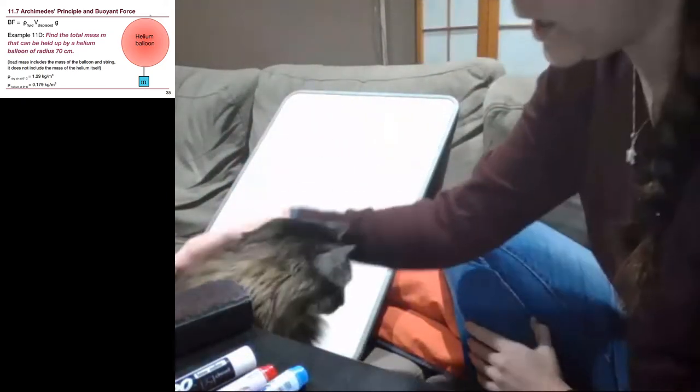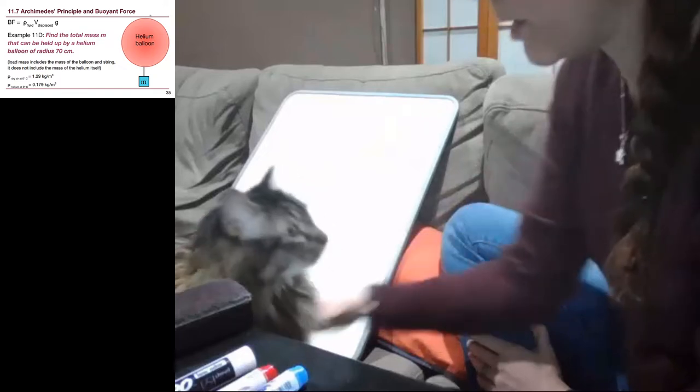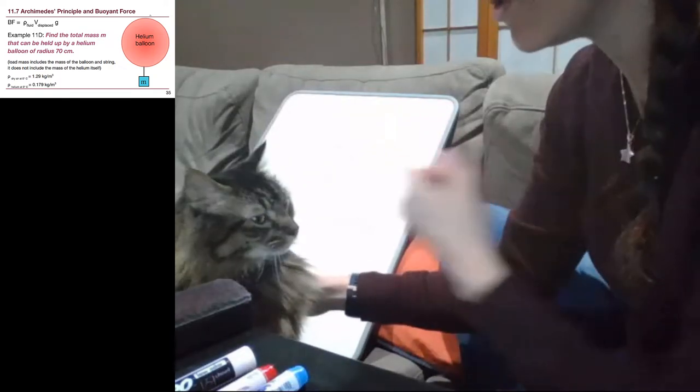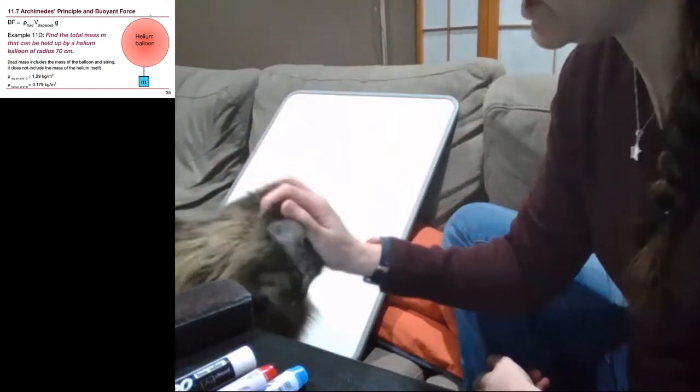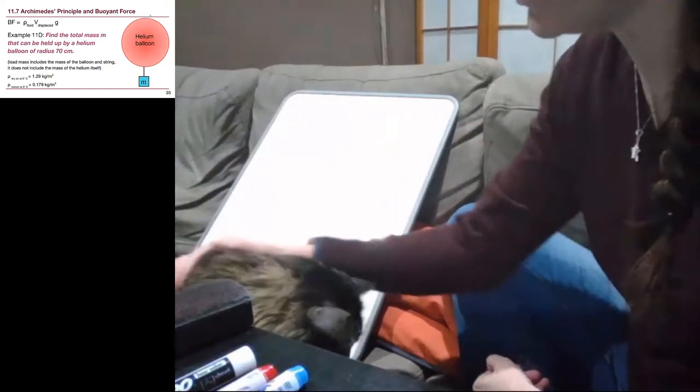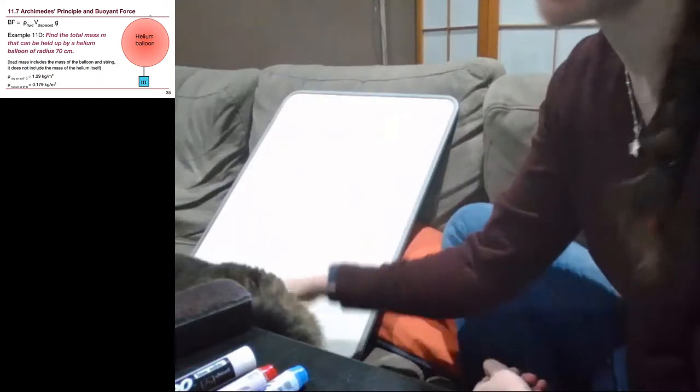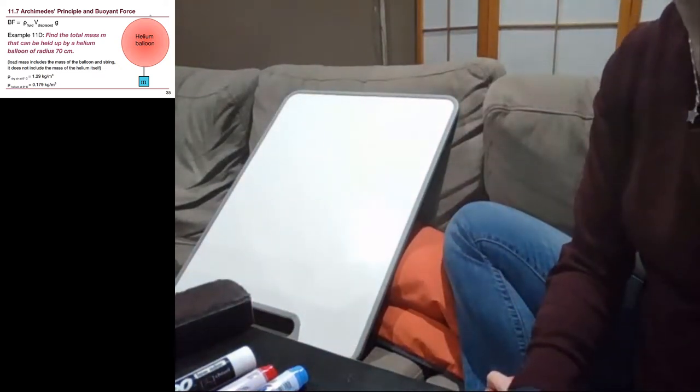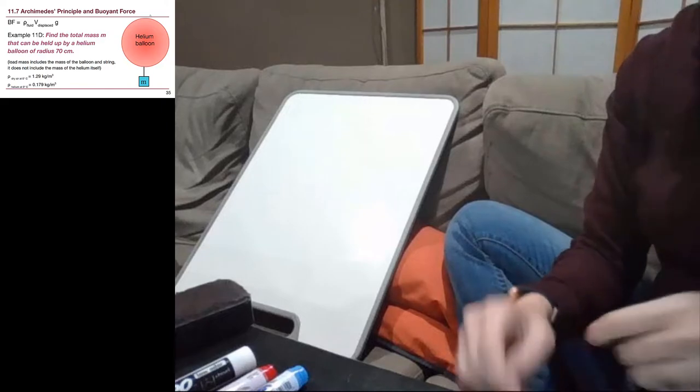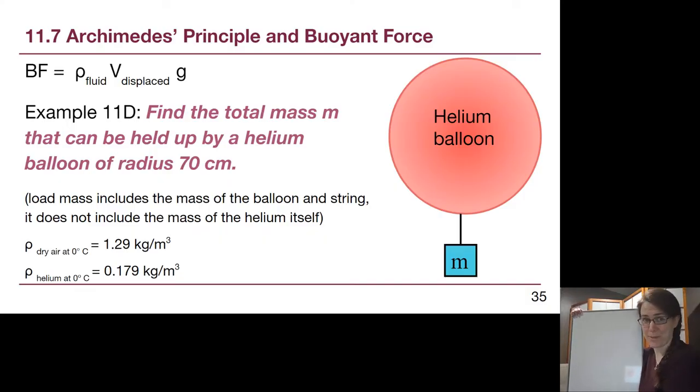My assistant is back and it's perfect timing because in this buoyant force video there's going to be two separate objects that we have to draw free body diagrams for. In this buoyant force example we have a helium balloon that is holding up some amount of mass, so our goal is to figure out the total amount of mass that can be held up by the helium in the balloon.